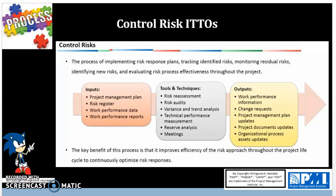Work performance data is a raw observation that is always going to be an input to any controlling process and will yield work performance information, which is data analyzed in context. That is a hallmark for all controlling processes, with the exception of monitor and control project work and perform integrated change control. The next input is the work performance report, coming from the monitor and control project work process, which takes into consideration status reports for any new or existing risks that need to be controlled.